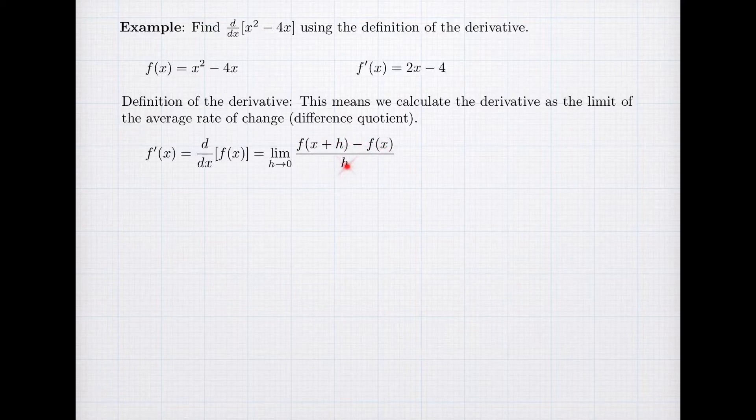We divide it by h. This gives me the average rate of change, the change in the function over the change in x. And then we need to take a limit as h goes to zero of that difference quotient.